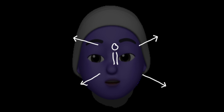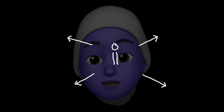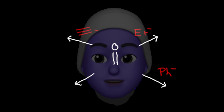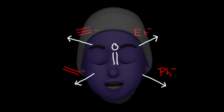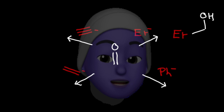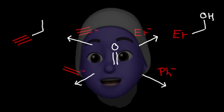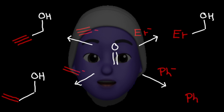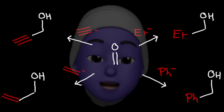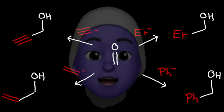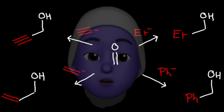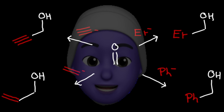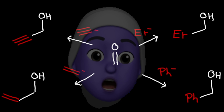Let's add these four carbanions to methanol and work out what happens: ethyl minus, ethinyl minus, phenyl minus, and ethinyl minus. In each case, after protonation, a primary alcohol is formed. These have one more CH2OH group — that's hydroxymethylene — than the carbon ions.